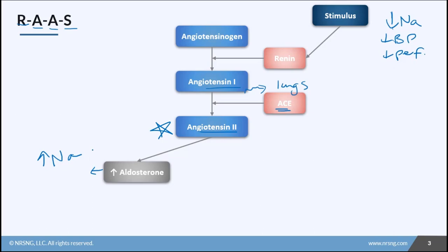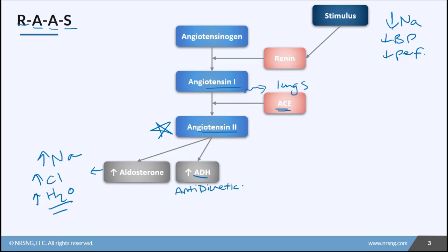Anytime sodium is reabsorbed or retained, chloride and water are going to follow, so we also see water retention. When we retain more water, our blood volume increases, which can increase our blood pressure. The second thing angiotensin-2 does is it causes the release of ADH from the pituitary gland. ADH stands for anti-diuretic hormone — anti-diuretic means we're not getting rid of water, so we're going to retain it. Again, we see more retention of water.